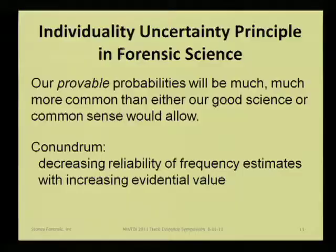I stated this slightly differently in 1991: our provable probabilities will be much, much more common than either our good science or common sense will allow. It translates to a conundrum of decreasing reliability of frequency estimates with increasing evidential value. I strongly suspect that as things move forward in decision-making theory and forensic statistics, some of these simplistic views will be modified, but I propose this as a principle we can at least discuss.